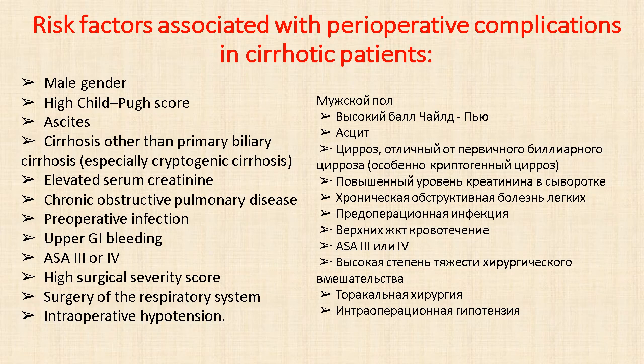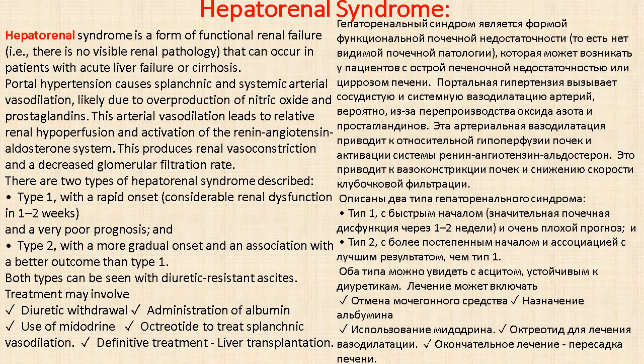Additional perioperative risk factors include: ascites, cirrhosis other than primary biliary cirrhosis, elevated serum creatinine, chronic obstructive pulmonary disease, preoperative infections, upper GI bleeding, ASA class 3 or 4, high surgical risk score, surgery of the respiratory system, and intraoperative hypotension. Postoperative hepatorenal syndrome is a form of functional renal failure that can occur in patients with acute liver failure or cirrhosis.